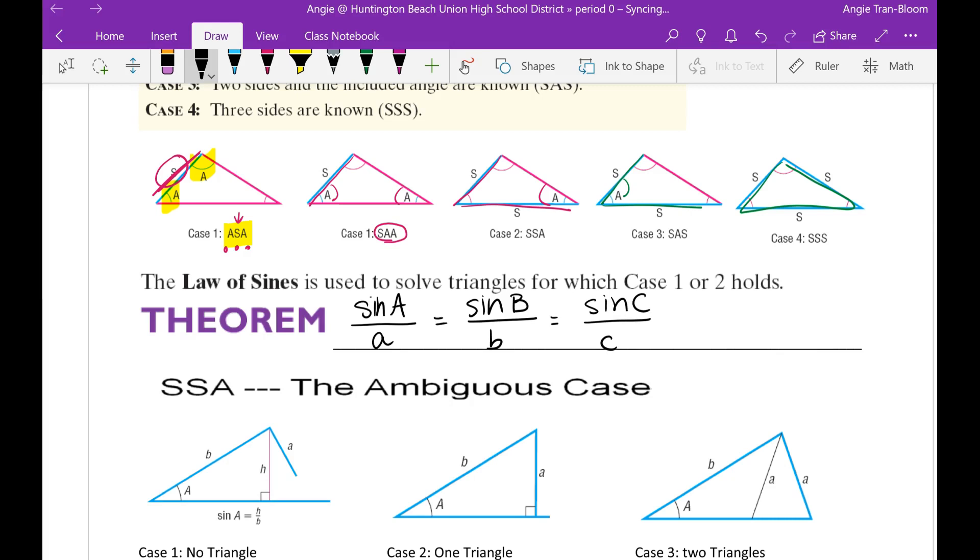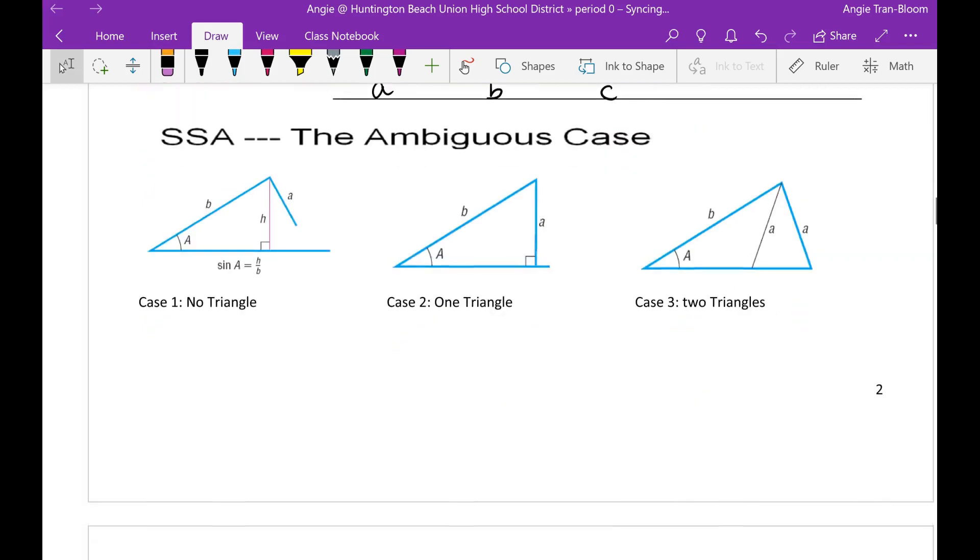And again, the Law of Sines can be used in non-right triangles. So let's move to, we're going to go straight to example one right now, and then we're going to come back to the ambiguous case. So let's go to example one.